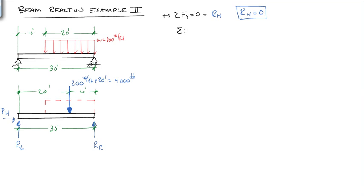And then we get sum of the moments. Again, let's pick the left end, point A, about point A, counted clockwise being positive, equals 0.